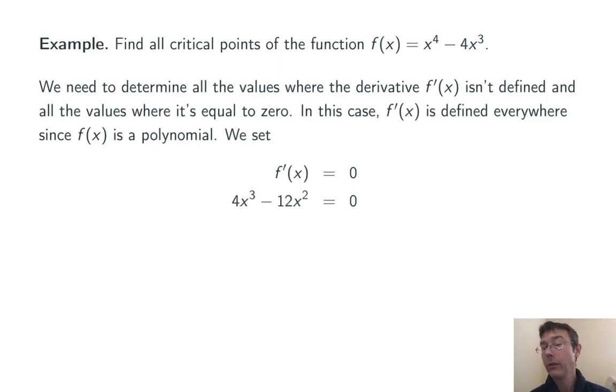In this case, the derivative is 4x to the 3rd minus 12x squared. We set that equal to 0 and solve by factoring. 4x squared times (x minus 3) equals 0, and the solutions are x equals 0 and 3. These are the critical values of the function f(x) equals x to the 4th minus 4x to the 3rd.